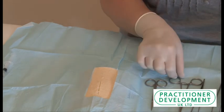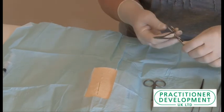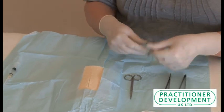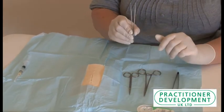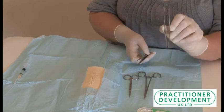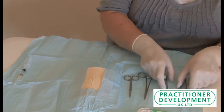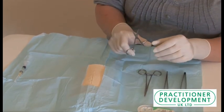The suture kit itself should have a needle holder, a pair of toothed forceps and a pair of non-toothed forceps, and a pair of scissors to cut.